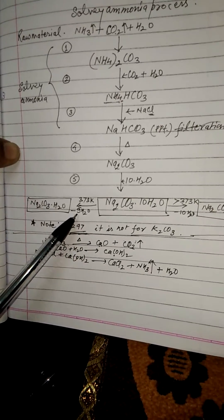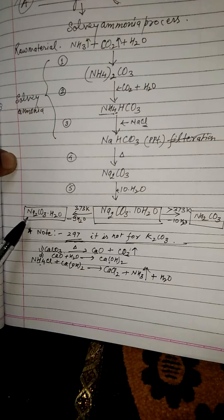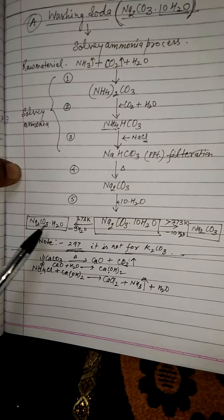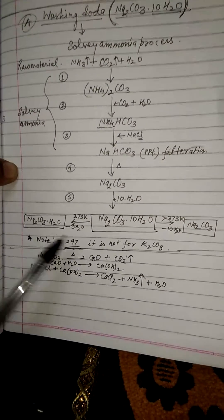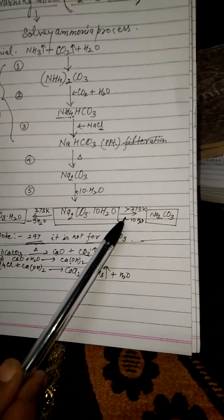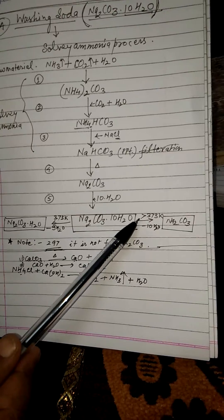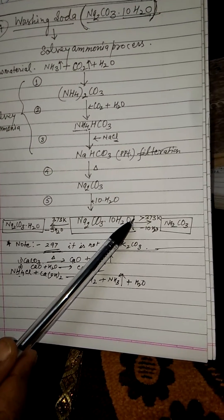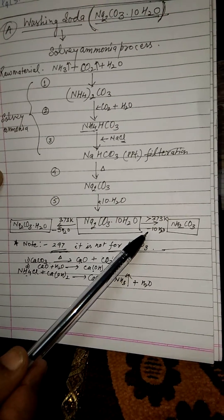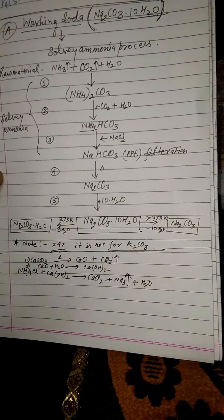Nine water molecules are removed and it converts into sodium carbonate monohydrate. The second one: if all ten water molecules are removed, it converts into anhydrous sodium carbonate.